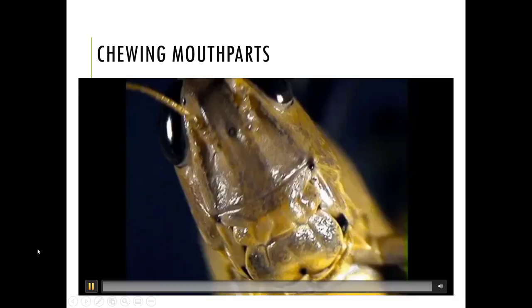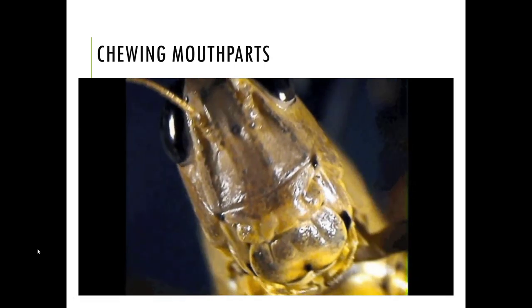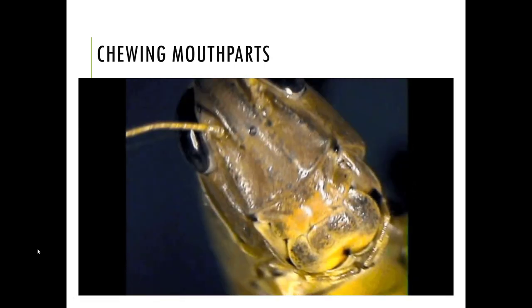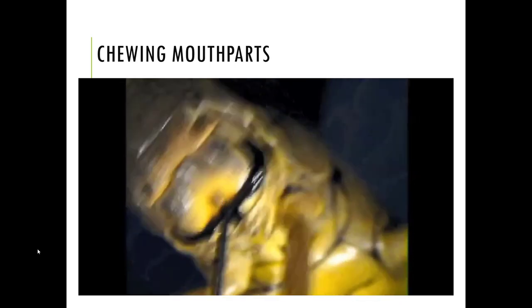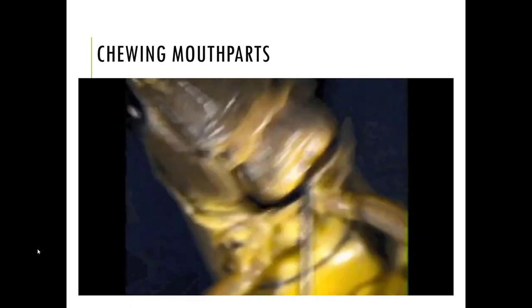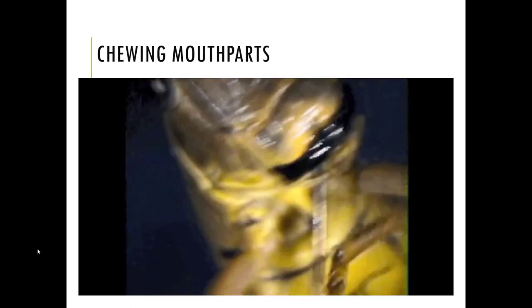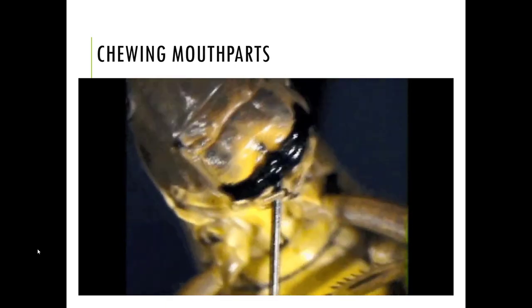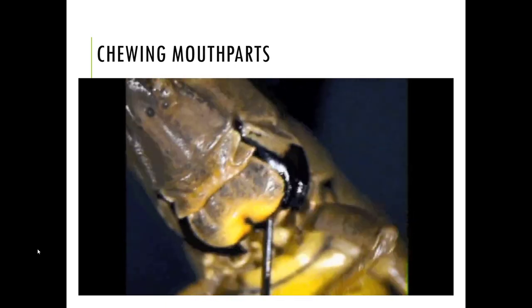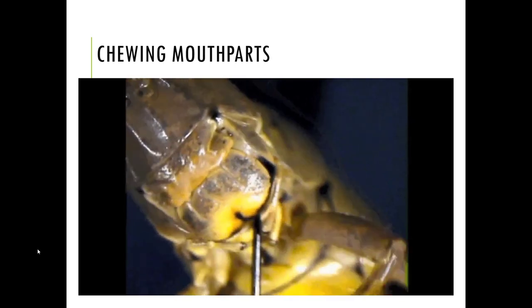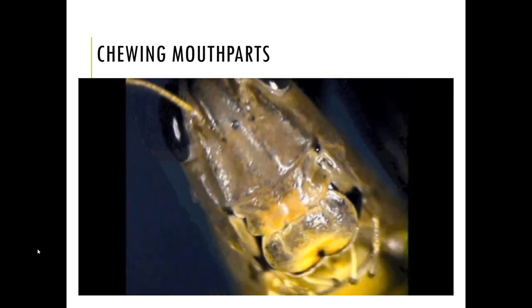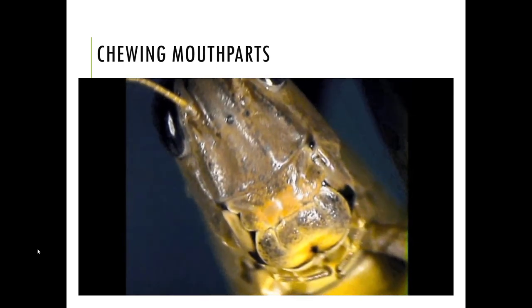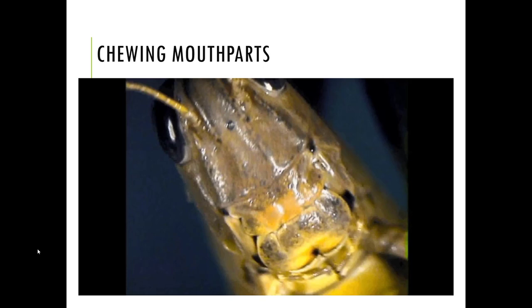Let's look quickly at a grasshopper's chewing mouthparts. Looking at a grasshopper face on, you'll notice something that kind of looks like a mustache — that's akin to our upper lip. You can see those black teeth, the mandibles, moving side to side. Insects chew and chomp sideways as opposed to us chewing up and down. They have a lower lip that protects the teeth, and then little fingers or palps that help them taste and move food into the mouth.